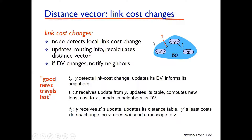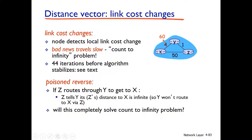That way, the link cost will decrease. The problem is when Y's link cost will increase — it will be more difficult. What is the problem? The problem is the routing loop situation. The Y node detects a link cost change, meaning it will increase. This problem is the count-to-infinity problem. This algorithm takes 44 iterations to stabilize.